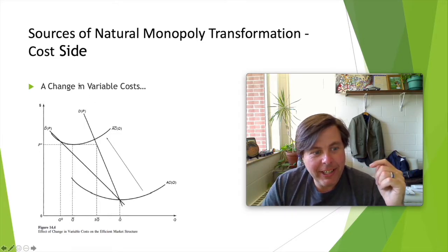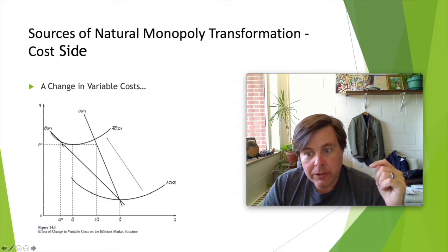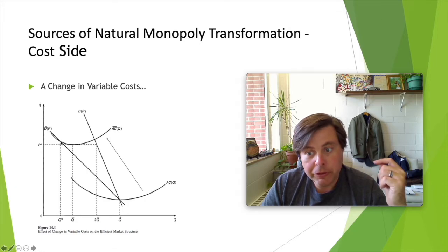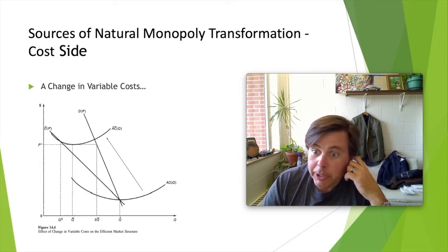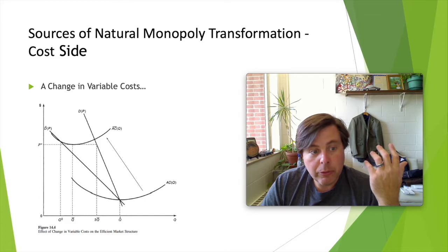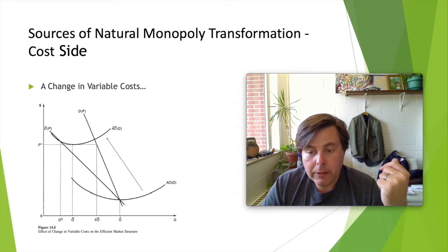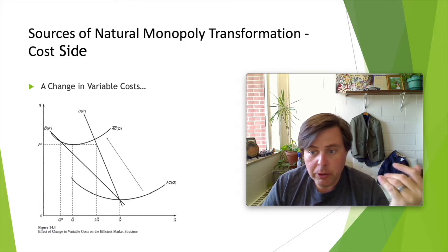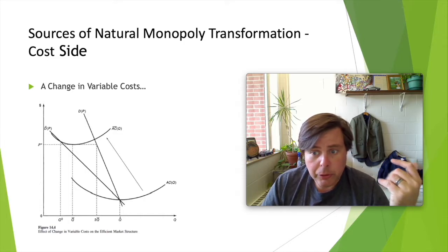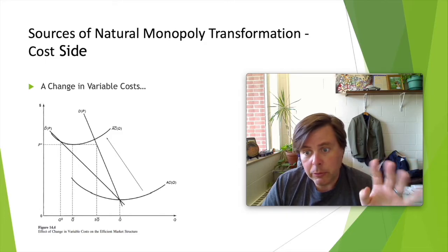In the latter case, with D bar of P, we see that the situation is not at minimum efficient scale — in fact, the firm is now more of a natural monopoly than it was before. So it depends essentially on the elasticity of demand — how elastic demand is — whether changes in variable cost structures are going to remove the natural monopoly or not.